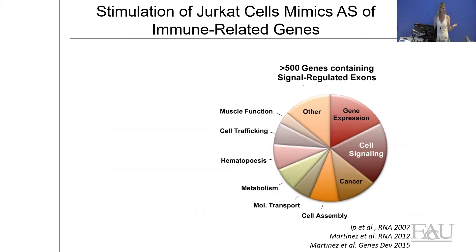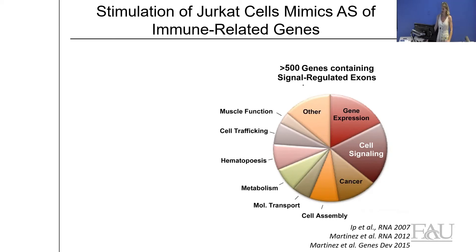To get at mechanism, we moved from primary cells to a Jurkat cell system to ask whether we can mimic the same T-cell activation events. The answer is yes. Using a targeted RNA sequencing approach called Razzle-seq in collaboration at UCSD, we identified about 500 genes that undergo changes in T-cell signal-induced alternative splicing in this Jurkat model system.